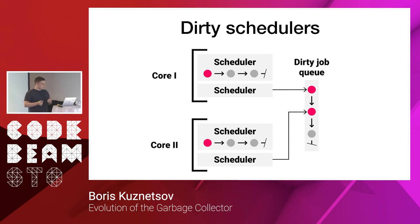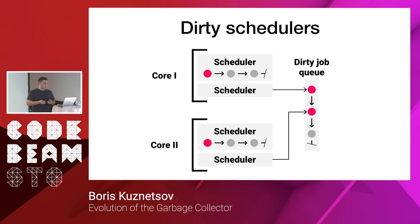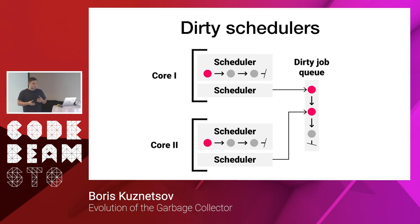To solve this kind of problem, the OTP team introduced to the community dirty schedulers. Dirty schedulers have a shared queue for dirty jobs. You can implement your native implemented function as a dirty function, and it will work on the dirty job queue, running on dirty schedulers. Dirty schedulers have their own rules and live in a parallel world on the same cores as normal schedulers. Let's go back to garbage collection and what it means to have dirty garbage collection.